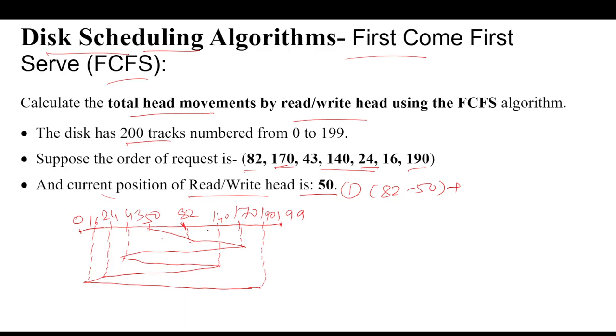From 170 we visited 43, so 170 minus 43. Whatever greater number is there, we use that greater number minus the smaller number. From 43 we visited 140, so 140 minus 43.